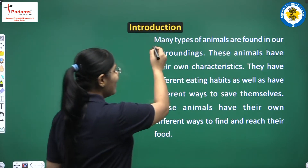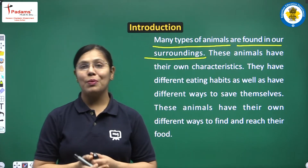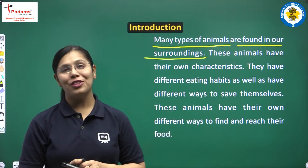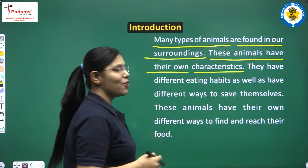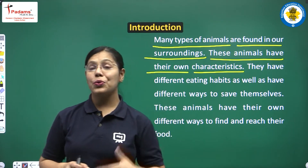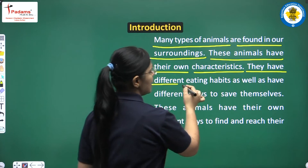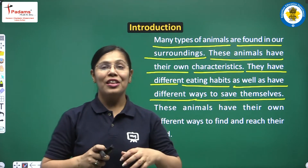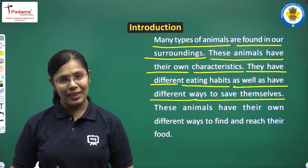Many types of animals are found in our surroundings. Humain humare aaspaas kai alag-alag prakar ke jeevjantu dekhne ko milte hain. These animals have their own characteristics — in sabhi jeevjantu ki apni-apni alag-alag visheshtayen hoti hain. They have different eating habits as well as different ways to save themselves.